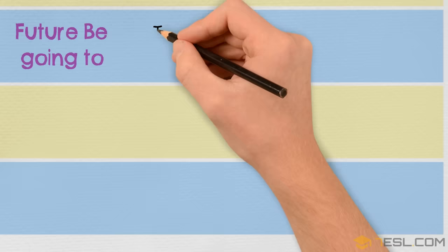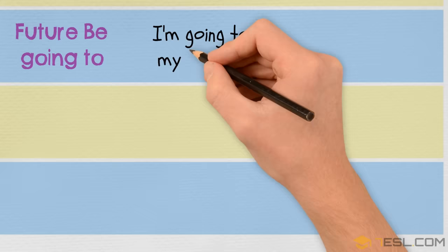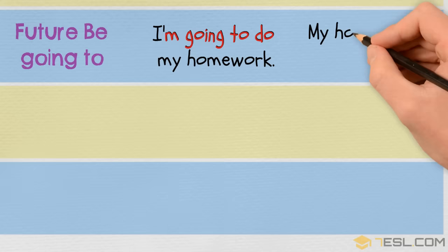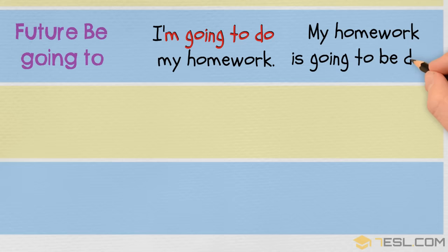Future be going to. Active: I'm going to do my homework. Passive: My homework is going to be done.